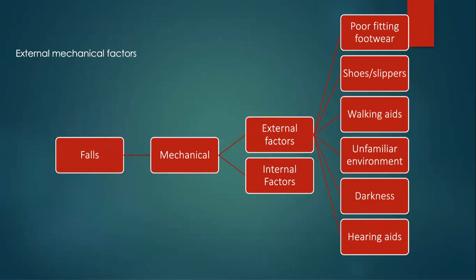Falls can be divided mainly into two categories: mechanical falls and non-mechanical falls. Mechanical falls mean that an external object or force led to the fall — in most instances, a variable that can be controlled. Once we have established that it was a mechanical fall, we may further categorize the cause into internal and external factors. External factors could include poor fitting footwear or footwear issues that cause the patient to fall, stumbling whilst using walking aids such as zimmer frames, unfamiliarity with a new place, or it being too dark to visualize surroundings. All causes are factors within our control to change or eliminate.